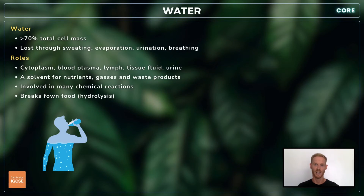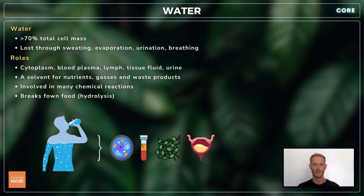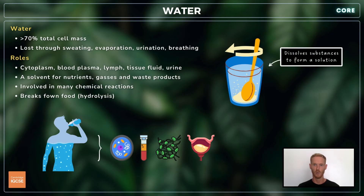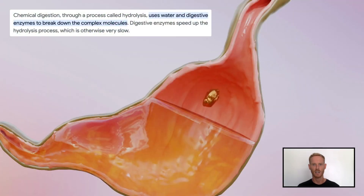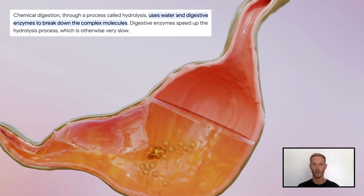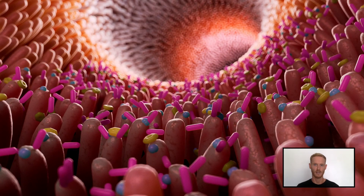The final nutrient is water, which accounts for 70% or more of total cell mass. It's the main component of the cytoplasm, blood plasma, lymph fluid, and tissue fluid. It acts as a solvent for digested foods, minerals, vitamins, and waste products like excess salt and urea, which are removed from the body by the kidneys. It's involved in many chemical reactions in cells and aids digestion, helping to break down insoluble food molecules into soluble ones by a chemical reaction called hydrolysis, then dissolving the products so they can pass through the intestinal wall into the bloodstream. Water is lost through sweating, evaporation, urination, and breathing, and must therefore be regularly replaced.